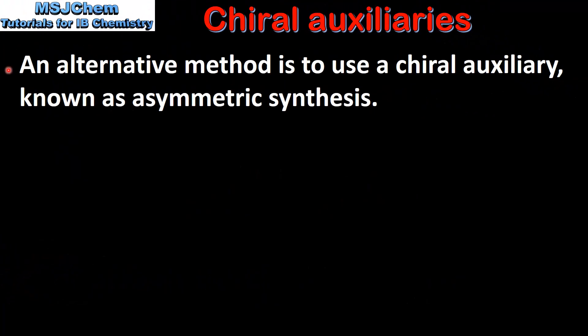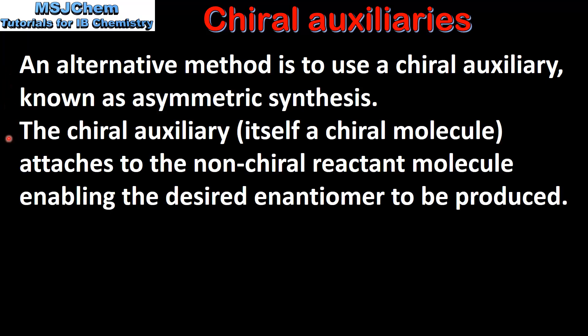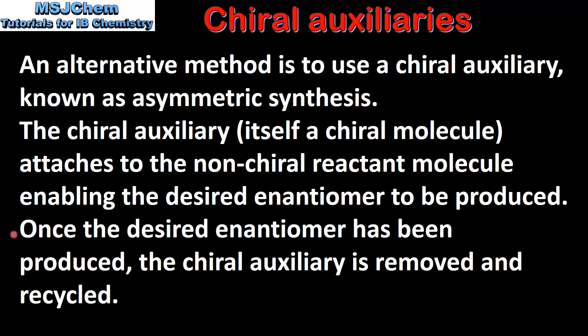An alternative method is to use a chiral auxiliary, which is known as asymmetric synthesis. The chiral auxiliary, which itself is a chiral molecule, attaches to the non-chiral reactant molecule, enabling the desired enantiomer to be produced. Once the desired enantiomer has been produced, the chiral auxiliary is removed and recycled.